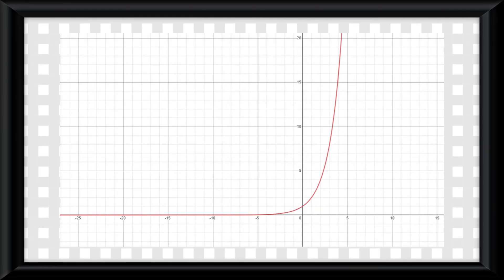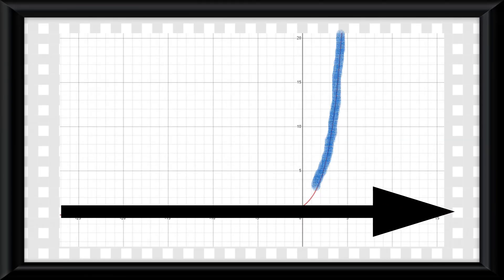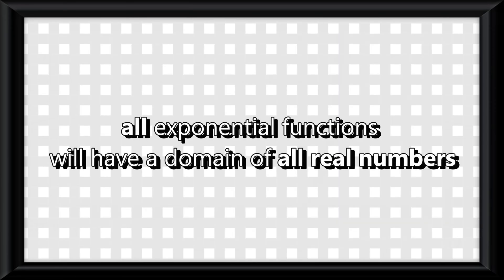I don't want an exponential function graph to trick you though. Despite it looking like it's curving up, it is still going to positive infinity on the x-axis. This means all exponential functions will have a domain of all real numbers.